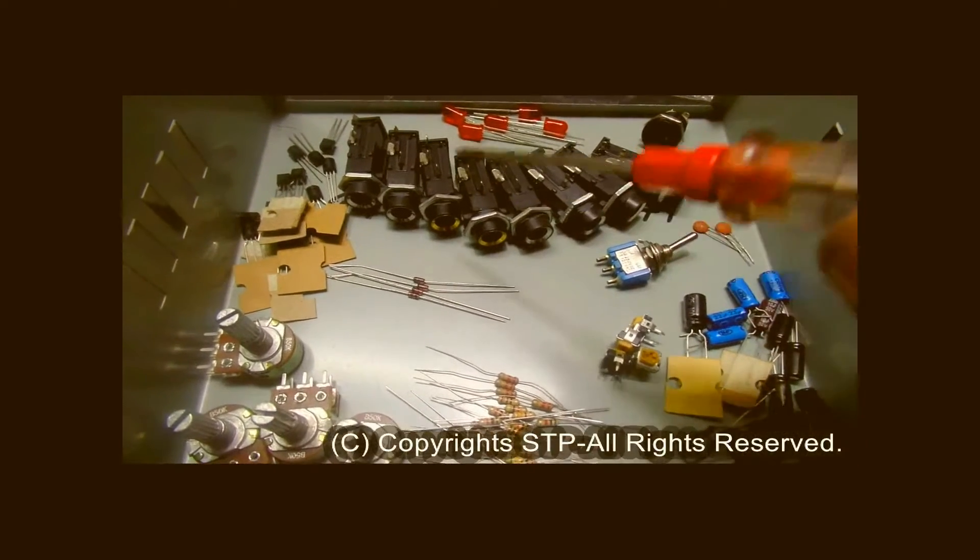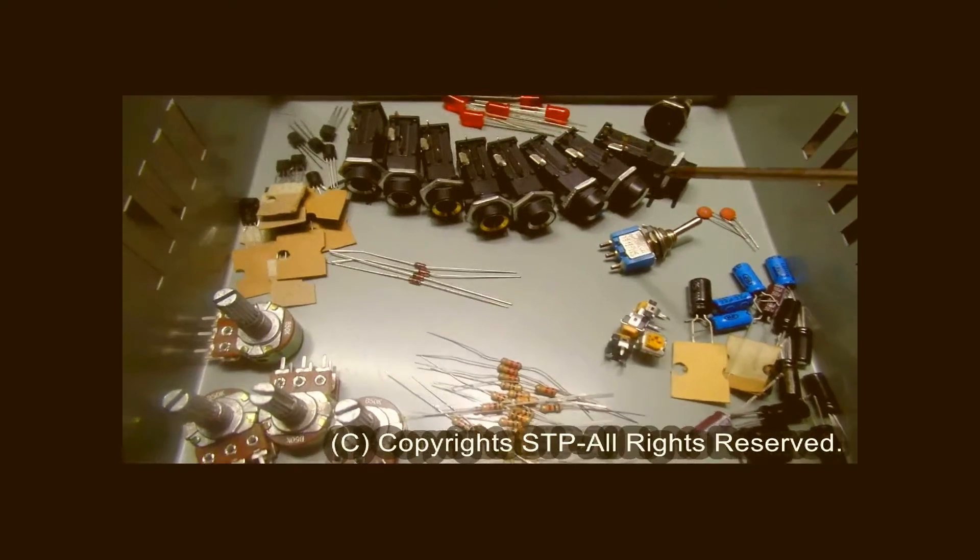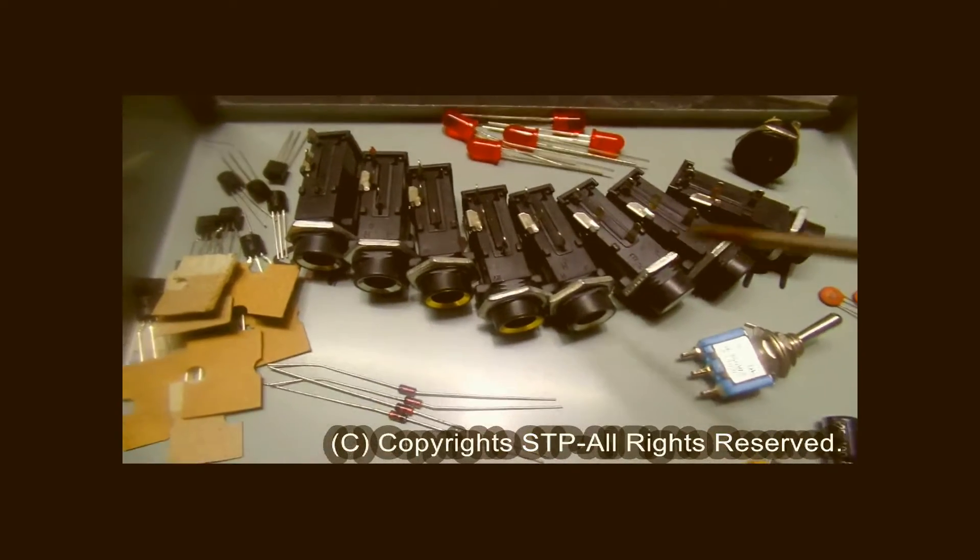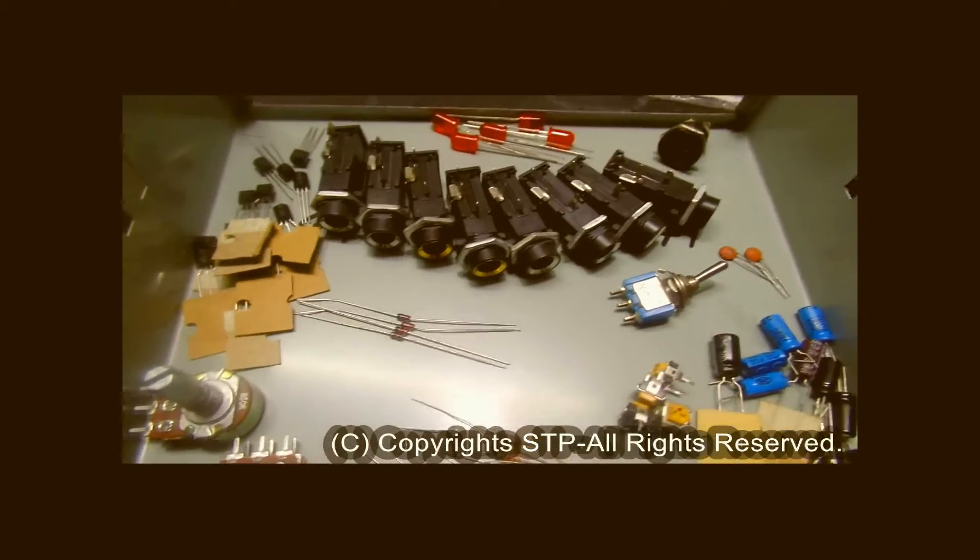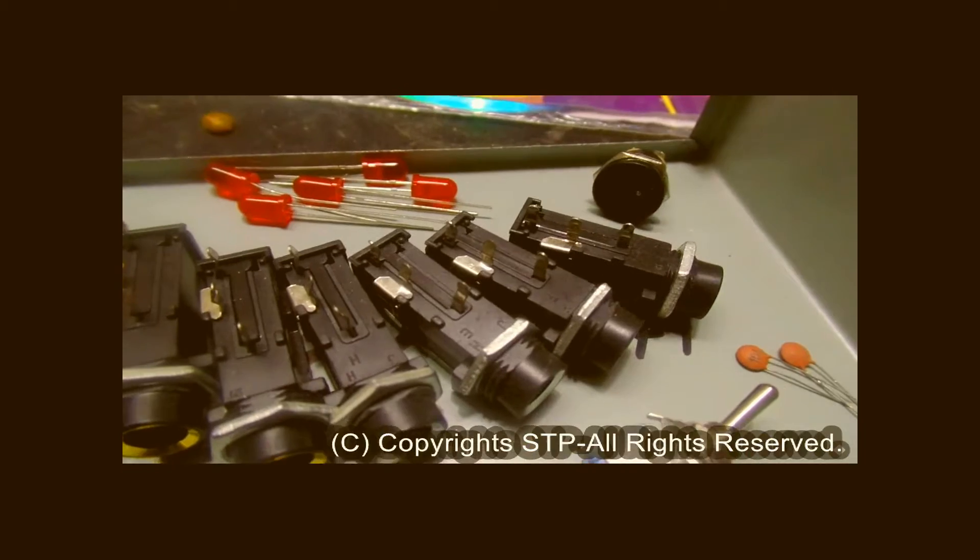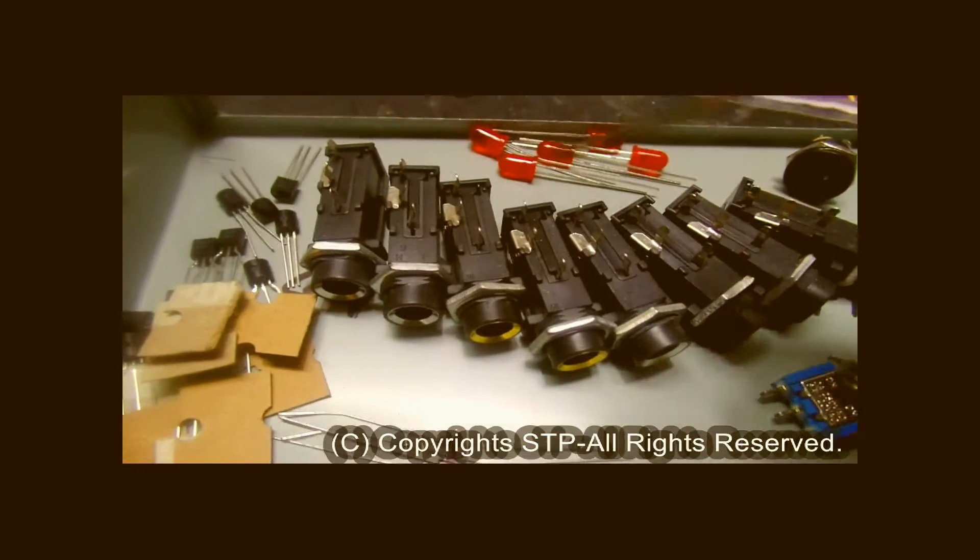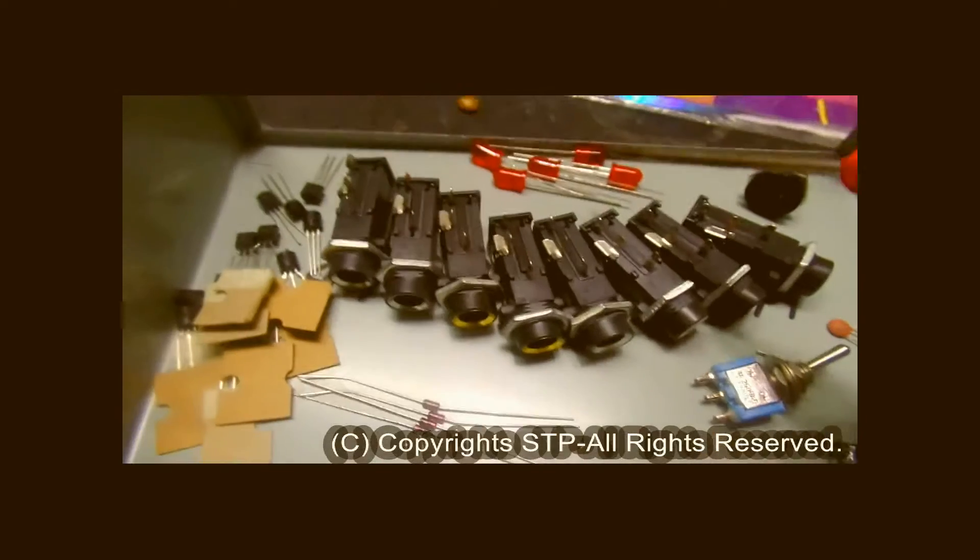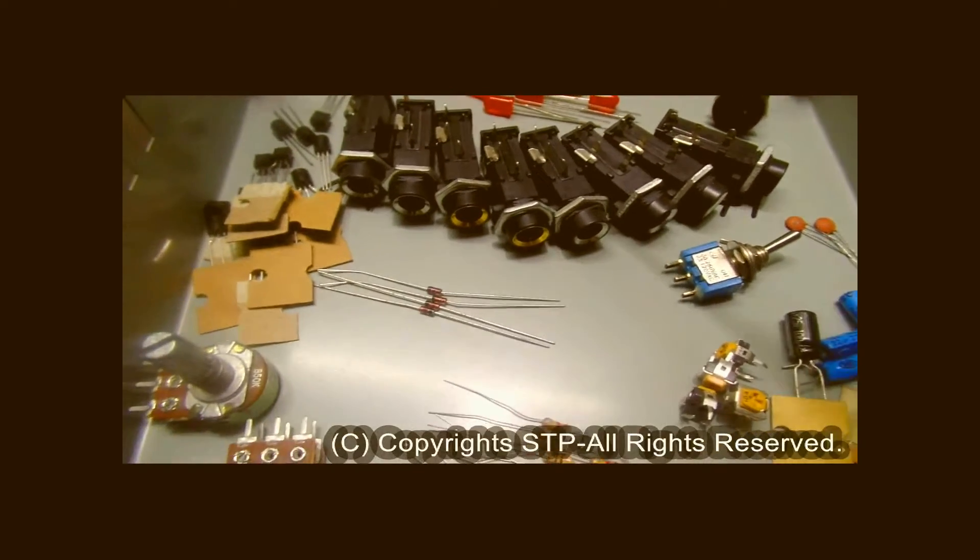Here are the 6.5mm jacks for the audio input. 4 will be used for the input and 4 will be used for the output. These jacks are long-lasting compared to others. Behind that you can see the DC jack which will power this preamplifier. These 4 LEDs will be used for peak indication and one will be used for power.